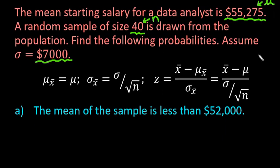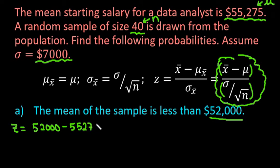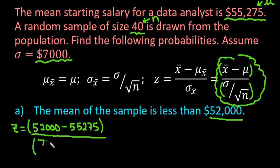The first thing we need to do is find the z-score. In order to find probabilities using a table, we need a z-score. It is very important when using this formula that you remember to put both the numerator and the denominator in parentheses. If you don't and you plug it into your calculator incorrectly, you're going to get the wrong answer. So x-bar is $52,000, minus the population mean of $55,275, divided by $7,000 over the square root of 40. Put the entire thing into your calculator rather than approximating the denominator first.